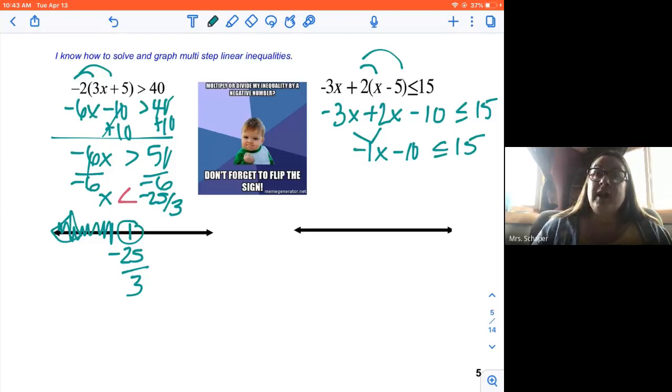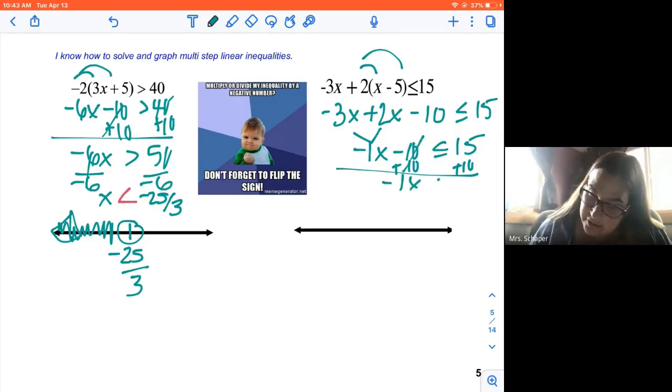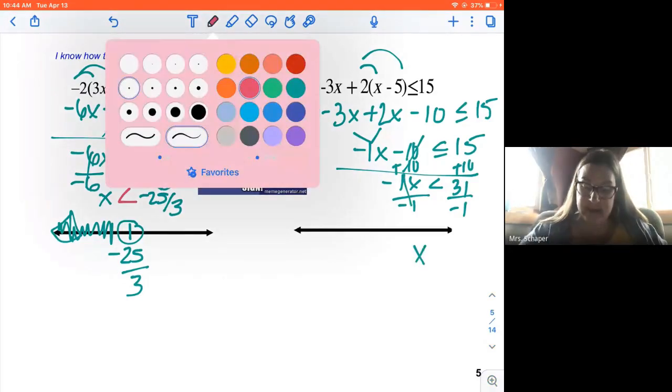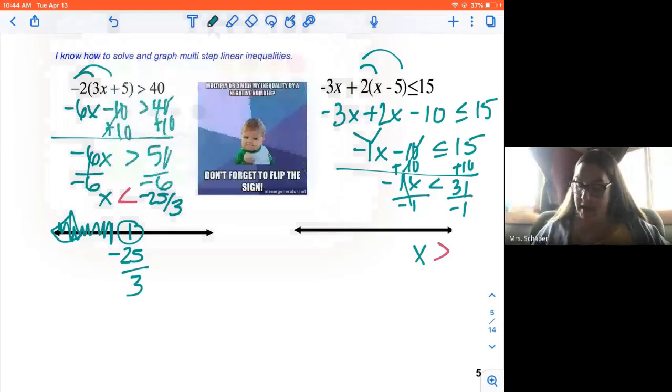I'm going to add 10 to both sides because 10 is undoing minus 10. So -1x is less than 31. We're going to divide both sides by negative 1. So when you divide by negative number, what you need to do is flip the sign. Whenever you multiply or divide by a negative number, you need to flip the sign.